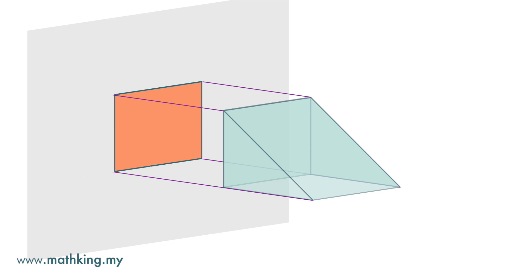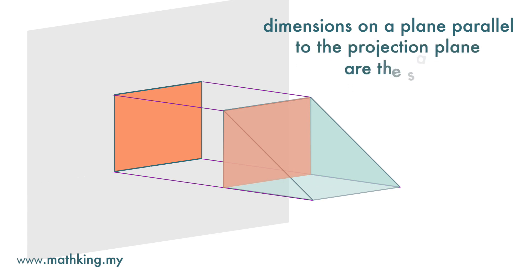But the dimensions or the length of the edges of this rectangle plane on the object and the projection image are the same. So we can see that only the dimensions of the plane on the object that is parallel to the projection plane are the same.